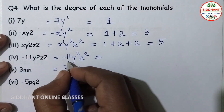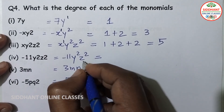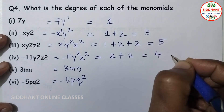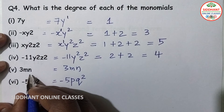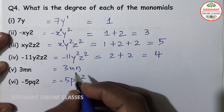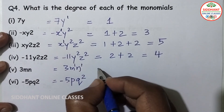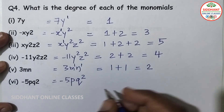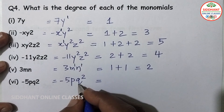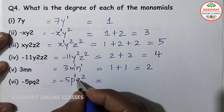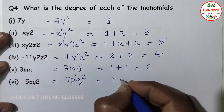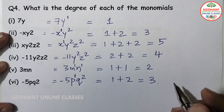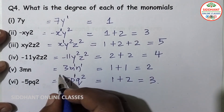Fourth — minus 11y square z square — y has degree 2 and z has degree 2, so 2 plus 2 equals 4. Fifth — 3mn — m has degree 1 and n has degree 1, so 1 plus 1 equals 2. Sixth — 5p square q square — wait, p has degree 1 and q has degree 2, so 1 plus 2 equals 3.